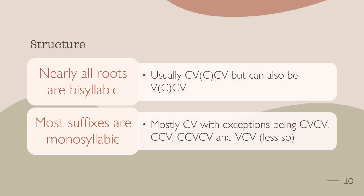Moving on to structure, the structure of Aymara is fairly straightforward. Roots are nearly all bisyllabic, while most suffixes are monosyllabic. Roots tend to follow a consonant-vowel, optional consonant, consonant-vowel pattern, but may also begin with a vowel alone. Suffixes, on the other hand, are mostly consonant-vowel, with various exceptions as listed, with vowel-consonant-vowel being the least common.